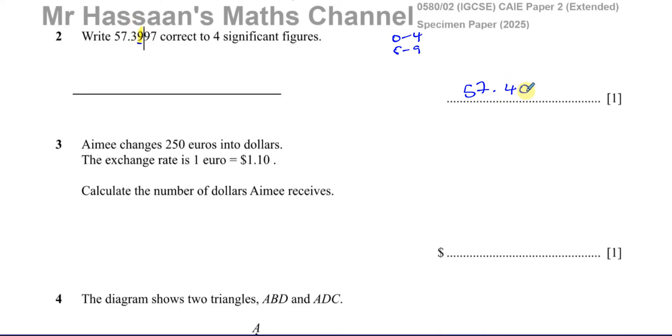So we must write that zero there, even though normally we would not write zeros at the end after the decimal point. But we must write it to get the marks here. If we don't write it, we'll lose the mark. It has to be 57.40 because that is the place for the fourth significant figure.